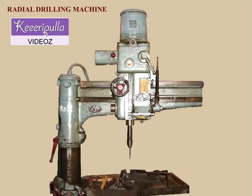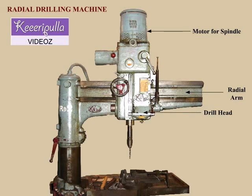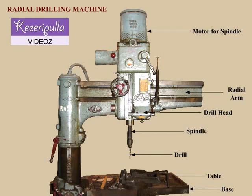The main parts of the radial drilling machine are a motor for the spindle, a radial arm, the drill head, the spindle, the table, the base, and the column.